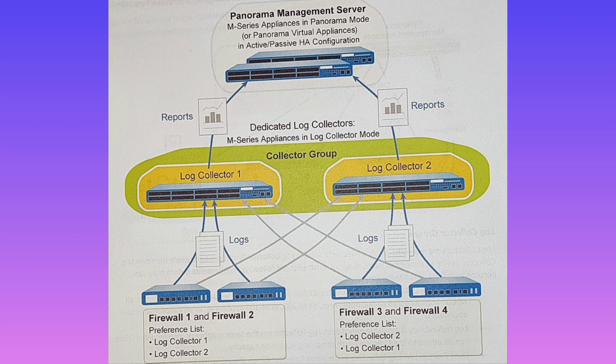1. In any single collector group, all log collectors must run on the same Panorama model — all M600 appliances, all M500 appliances, all M200 or all M100 appliances, or all Panorama virtual appliances. 2. Log redundancy is available only if each log collector has the same number of logging disks. 3. Disks can be added to a log collector with remaining expansion capacity. 4. Best practice: all log collectors in the same collector group should be in the same local area network (LAN). 5. Avoid adding log collectors in wide area networks to the same collector group, because network disruption is much more common and may result in log data loss.